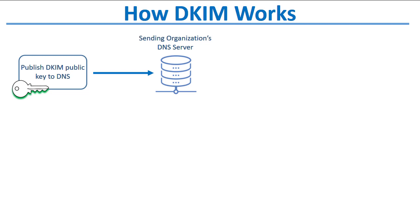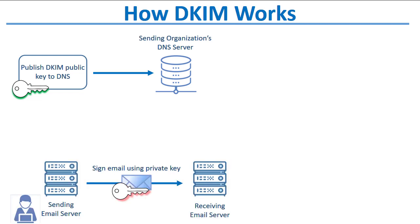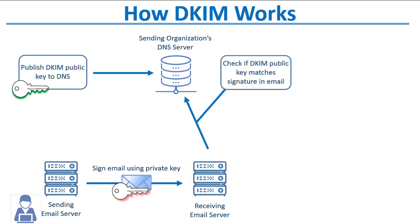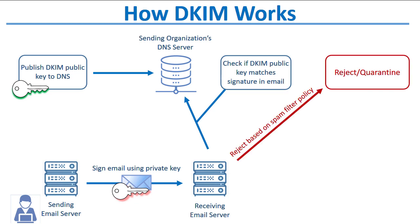Here's an overview of how DKIM works. The sending organization publishes a public DKIM key to their DNS records, and this key can be generated in Security Gateway. The sending server or gateway signs outbound emails from local users with the corresponding private key. When the receiving server receives the email, it sees that the message has been signed with DKIM, and then checks the DNS records of the domain contained in the DKIM signature, comparing the public key found in that domain's DNS records with the private key used to sign the email. If those keys do not match, then the message can be rejected or quarantined.